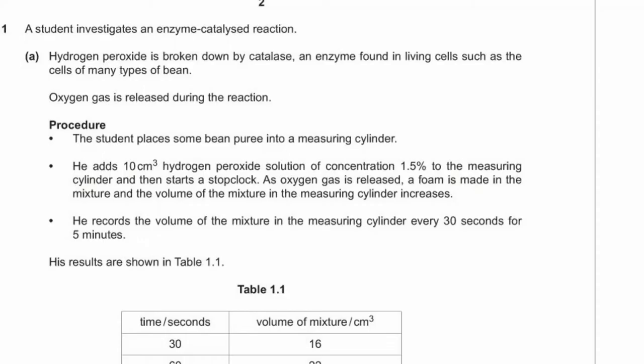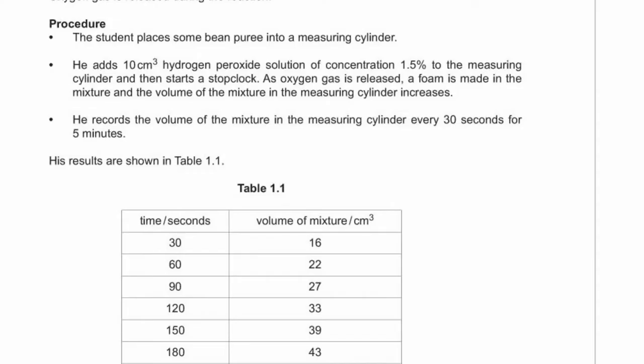Question 1. A student investigates an enzyme-catalyzed reaction. Hydrogen peroxide is broken down by catalase, an enzyme found in living cells such as the cells of many types of bean. Oxygen gas is released during the reaction. The student places some bean puree into a measuring cylinder, adds 10 centimetres cubed of hydrogen peroxide solution of concentration 1.5%, then starts a stop clock. As oxygen gas is released, a foam is made and the volume increases. He records the volume every 30 seconds for 5 minutes. His results are shown in Table 1.1.